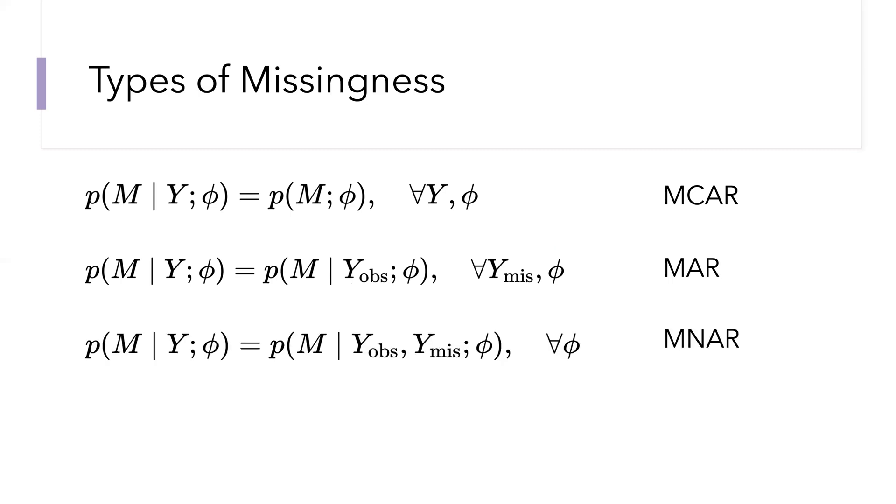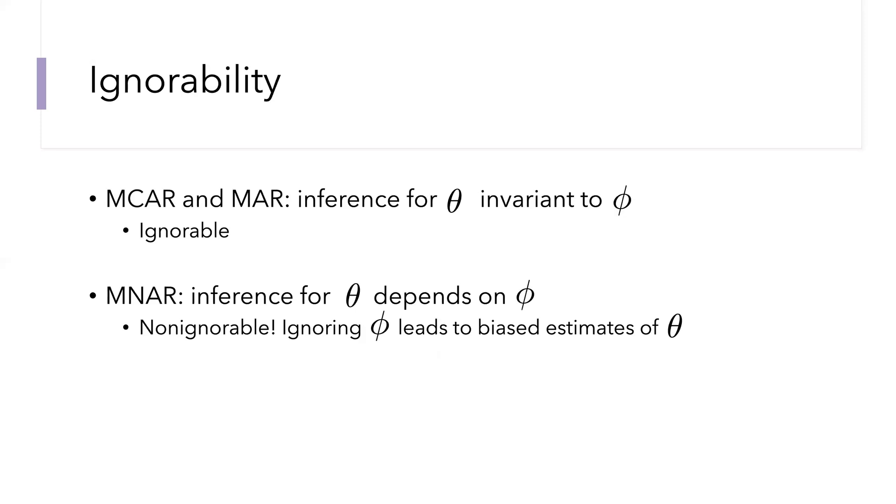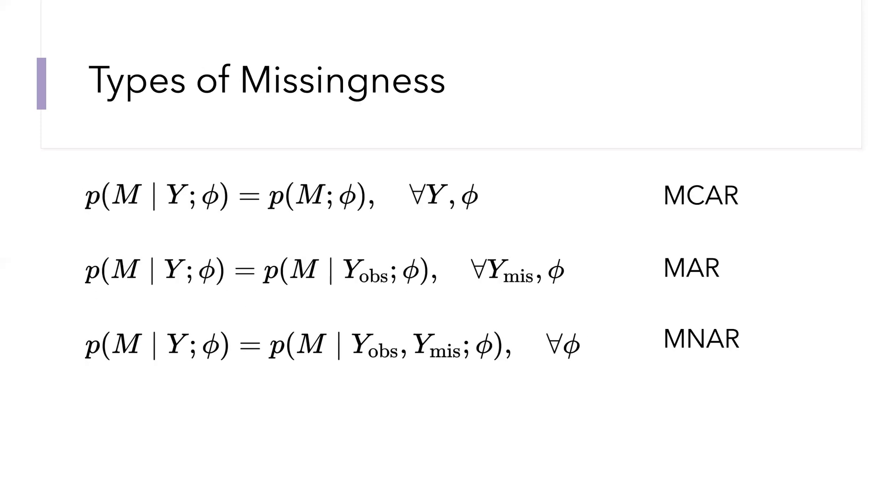The one we'll be focusing on a bit more in this lecture is what we call missing not at random, or MNAR. Here, we cannot make any simplifying assumptions about this model for the missingness. In other words, the probability of missingness depends on the complete data. We need to condition on both the values we observe and the values we don't, Y_obs and Y_miss. An example of this would be exactly that self-masking missingness example that I gave on the previous page, where the probability of missingness depends on the peptides possibly missing abundance.